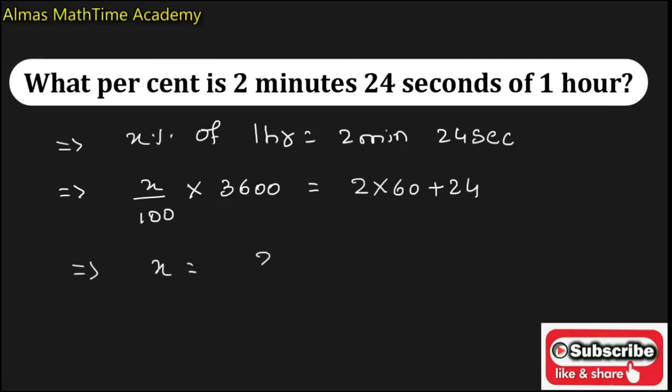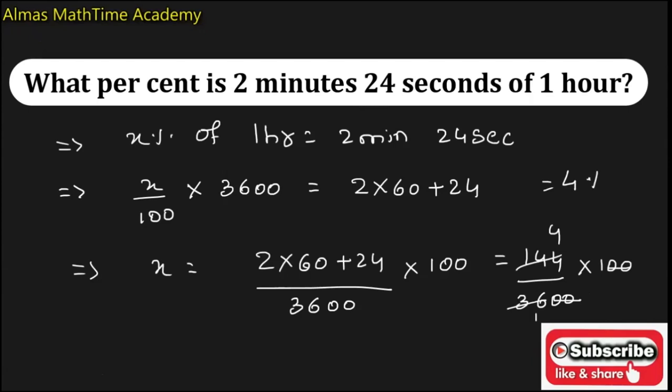It will become 2 into 60 is 120 plus 24 is 144 upon 3600 into 100. The zeroes get cancelled, 36 and 144. The answer is 4 percent. Now 4 percent is 2 minutes 24 seconds of 1 hour. This was the one method.